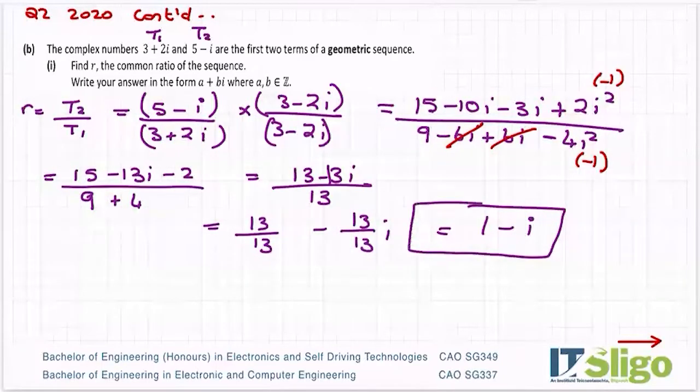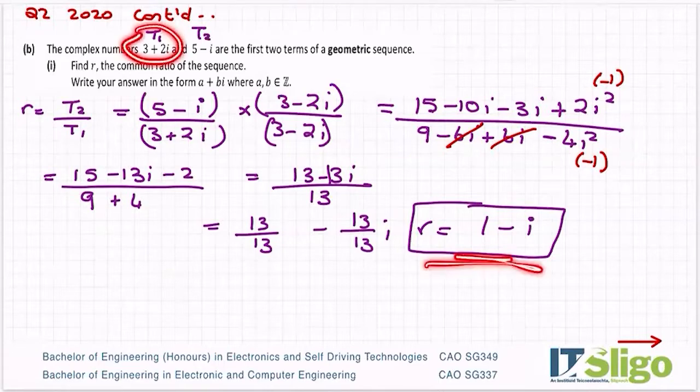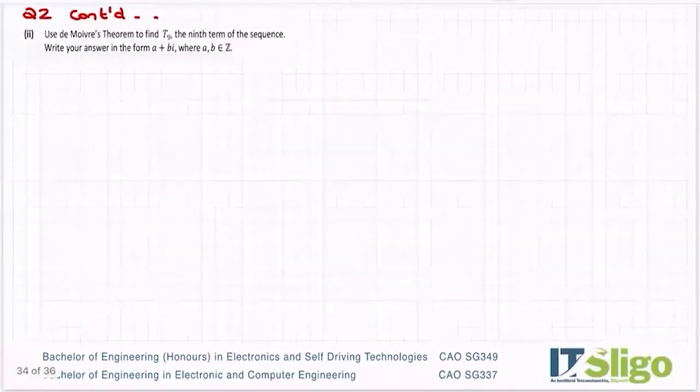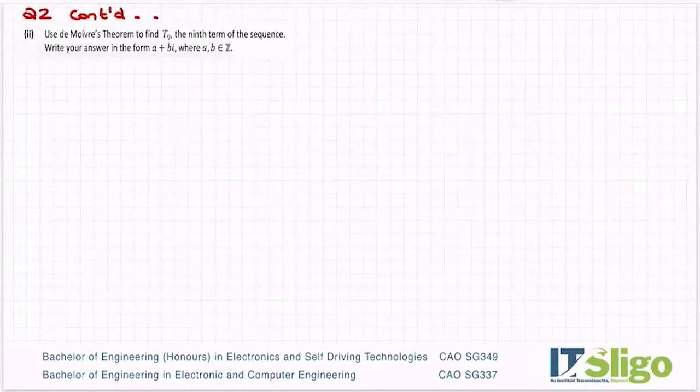So that's my common ratio, 1 minus i. In other words, if I multiply 3 plus 2i by 1 minus i, I'm going to get the second term. It's basically examining the fact that you know the common ratio is T2 over T1. Use De Moivre's theorem then to find T9, the ninth term of the sequence. Write your answer in the form a plus bi.